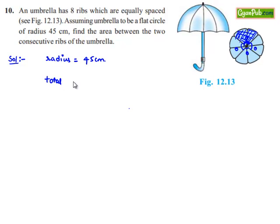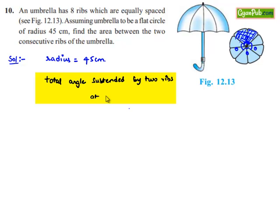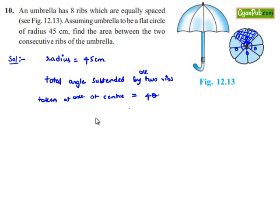Therefore, the total angle subtended by two ribs at the center will be equal to 4 theta. We know that the angle subtended by the full circle at the center is 360 degrees. Therefore, 4 theta equals 360 degrees, which implies theta — the angle subtended by two consecutive ribs — is equal to 360 divided by 4, that is 90 degrees.